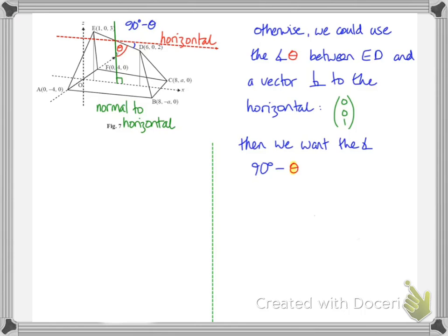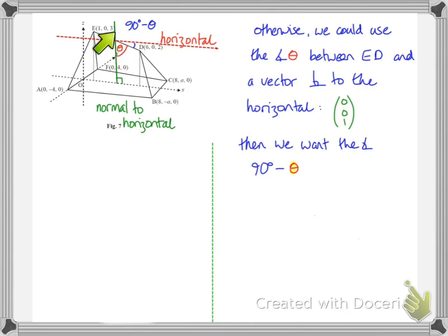If we hadn't spotted that method, there's another approach using dot products. Looking at the horizontal, that's parallel to the OX axis. We could find the angle between ED and the perpendicular to that, giving us an angle theta between ED and the vertical. Since vertical and horizontal make a 90 degree angle, once we've found theta we need to do 90 minus theta. The reason is that the horizontal doesn't have a vector — it's similar to finding the angle between planes, where we use the angle between their normal vectors.